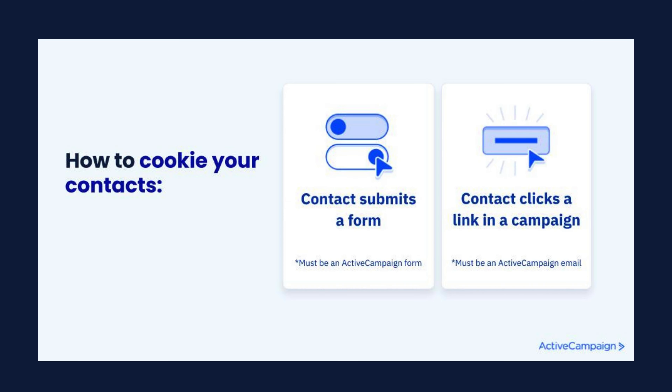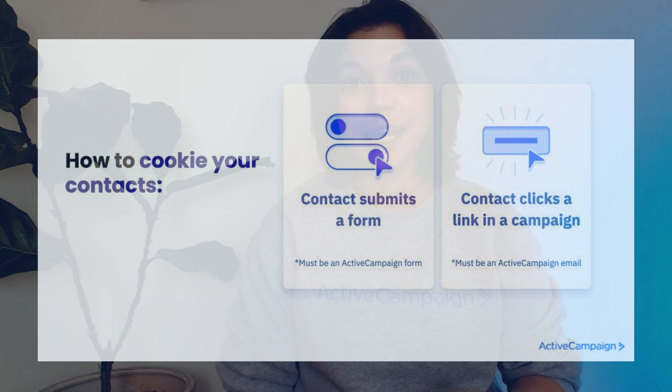Site tracking begins to work once your contacts have been cookied through ActiveCampaign. There are two opportunities for your contacts to accept cookies for ActiveCampaign site tracking. The first opportunity is when they submit an ActiveCampaign form that redirects them back to your website. The second is when they click on a link in an ActiveCampaign email that sends them back to your website.